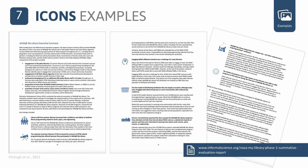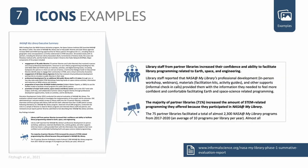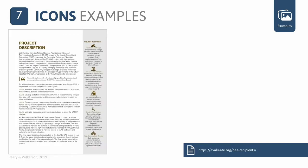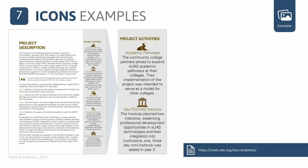Here is an example from Fitu and colleagues — in this report they used icons for each of their key findings. As a reader you can easily scan the icons to identify where a new finding begins and what might interest you. Here is an example from Perry and Wilkerson, who received the 2021 ATE Outstanding Evaluation Report Award, where they used icons for each of their project activities — so you can easily identify where a new activity begins.